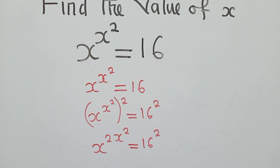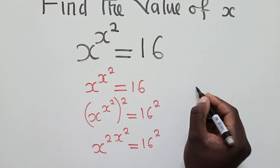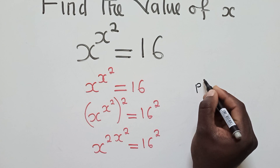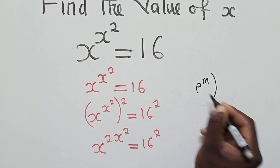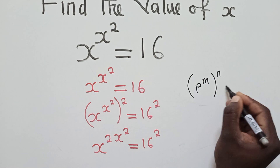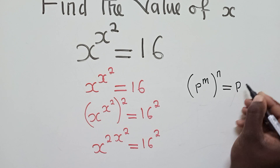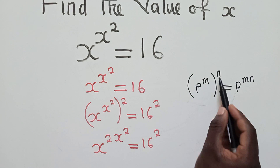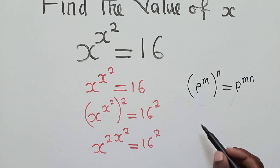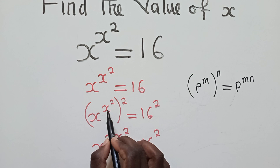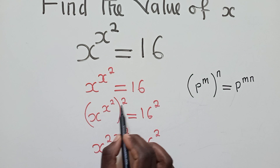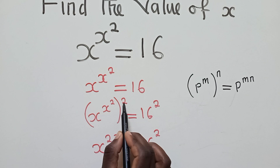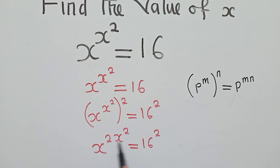Now your question may be: how have I reached this point? I've reached it by using the laws of indices. When you have p to the power m, raised to the power n, your answer will be p to the power m×n — you simply multiply the powers. The same is what happened here: x power 2 multiplied by 2 gives x power 2×2.